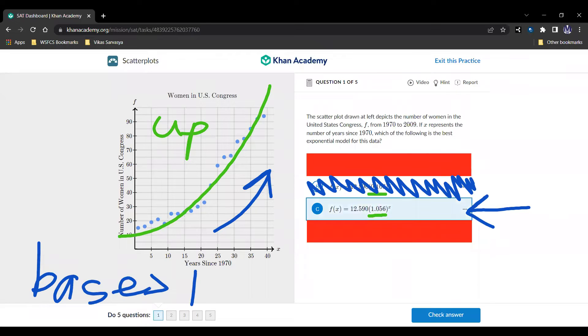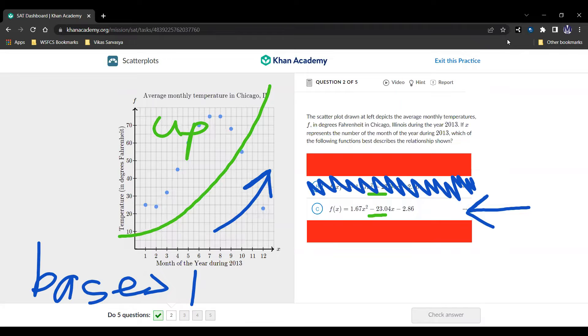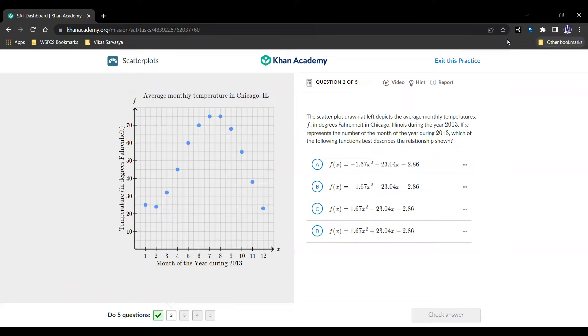And let's move on to the next question. All right, here we are. Question number two, we're given a graph of the average monthly temperature in Chicago, Illinois, starting from month of the year during 2013, starting from January, Monday, and December. And we're measuring this in degrees Fahrenheit, and let's see what they're asking us to do. So they're telling us that the scatter plot drawn at left depicts the average monthly temperatures in degrees Fahrenheit in Chicago, Illinois, during the year 2013. If x represents the number of the month during 2013, which of the following functions best described the relationship above?